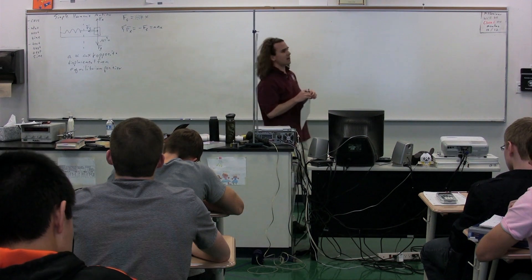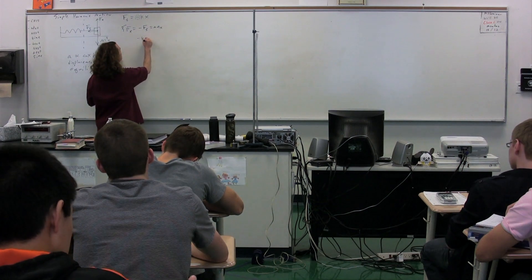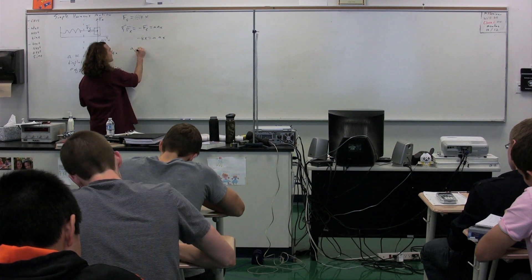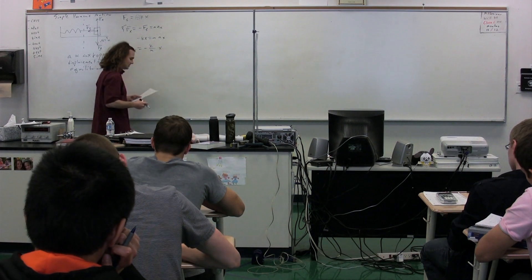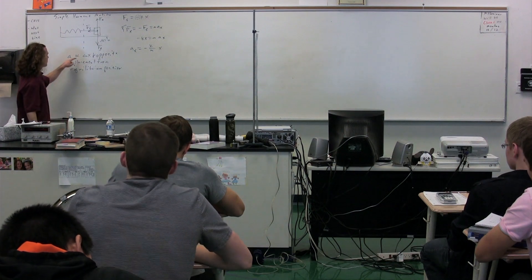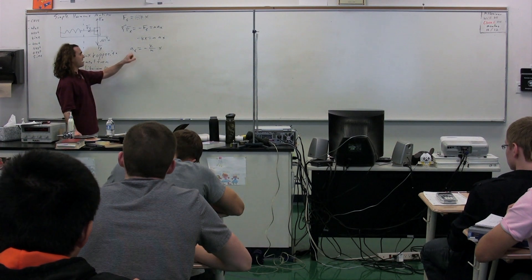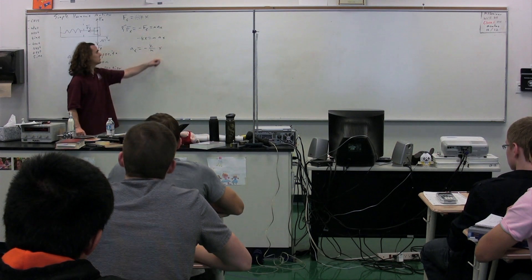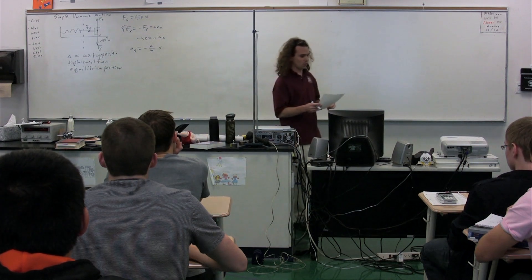Once you've drawn the free body diagram, you do not need to include that negative again. So we have negative kx equals mass times acceleration in the x direction. In other words, the acceleration in the x direction equals negative k over m times x. In simple harmonic motion, the acceleration is proportional to the displacement and opposite to it, with the proportionality constant k over m.